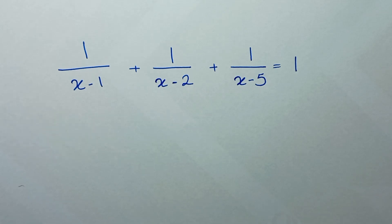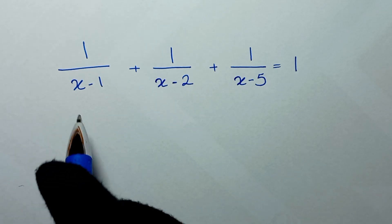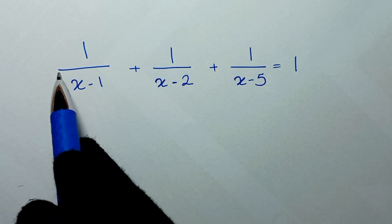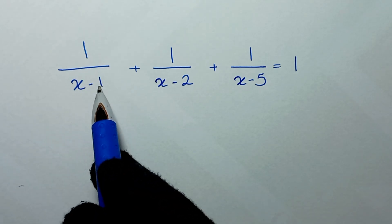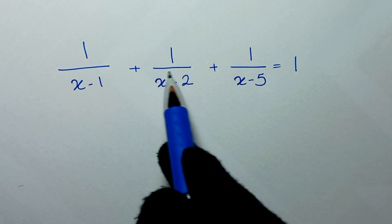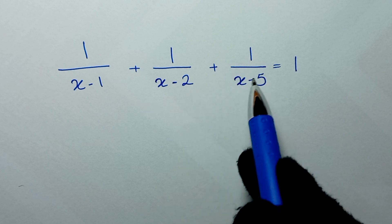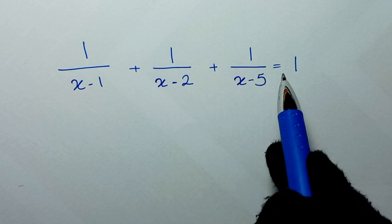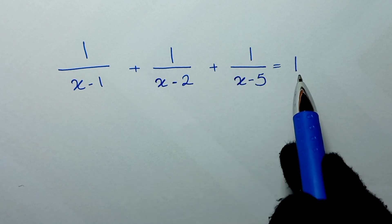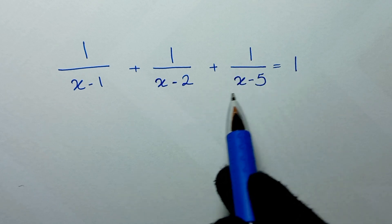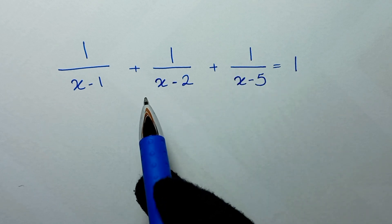Hello my friends, you're welcome to solve this math problem which is 1 over x minus 1 plus 1 over x minus 2 plus 1 over x minus 5 is equal to 1. We need to find the values of x.